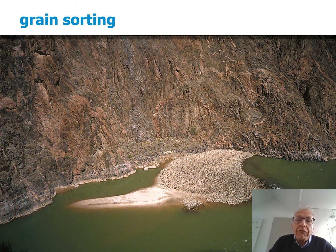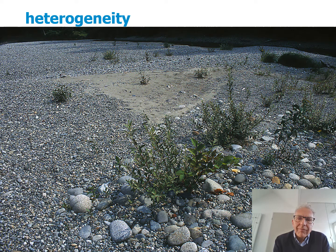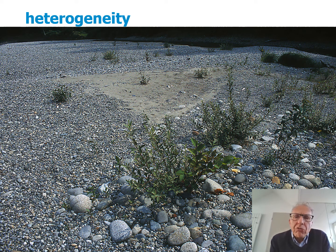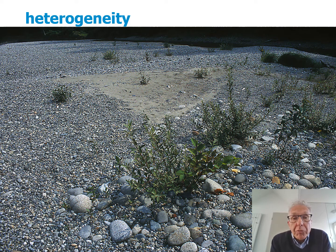Another example of grain sorting is in the Colorado River, where the upstream part of the bar consists of gravel and the downstream part of sand. This grain sorting can also lead to all kinds of patches of different grain sizes.